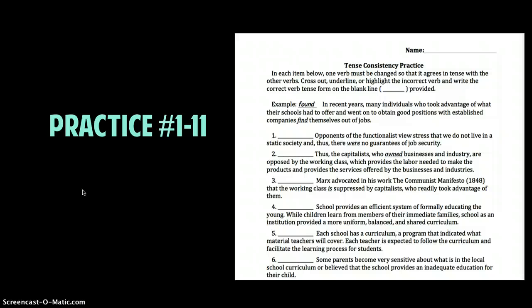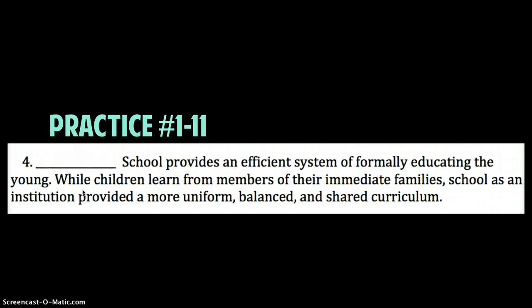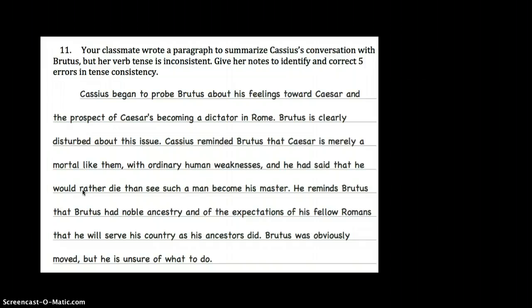In the assignment you have tonight, practice this. You'll see that the first three exercises have the verbs identified for you, indicated by italics and underline. But after those first three, it's your job to figure out which verb needs fixing — I will not indicate any verbs for you. You have to identify and correct them. And for that last question — the paragraph your classmate wrote about Cassius and Brutus — you need to consider all the rules we've just talked about and apply everything in practice on that last problem. Email me if you have any questions. Good luck.